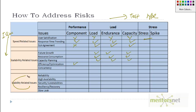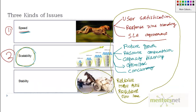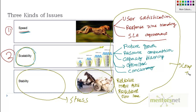For stability-related issues, stress and spike testing provide the most answers, while component testing provides none. Endurance testing and load testing also contribute to reliability. In summary: most stability issues are addressed by stress testing, most scalability issues are addressed by load testing, and most speed-related issues are addressed by either load testing or component testing, which is also called performance testing.